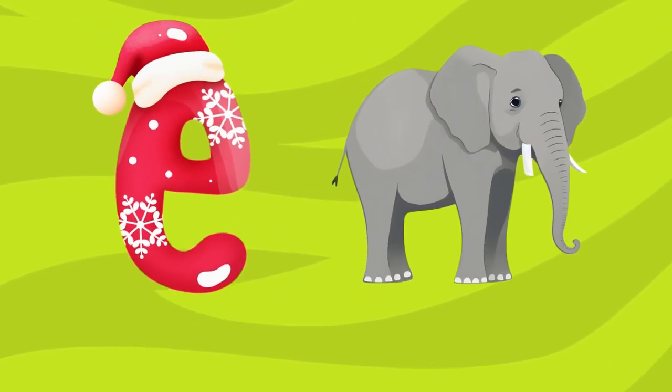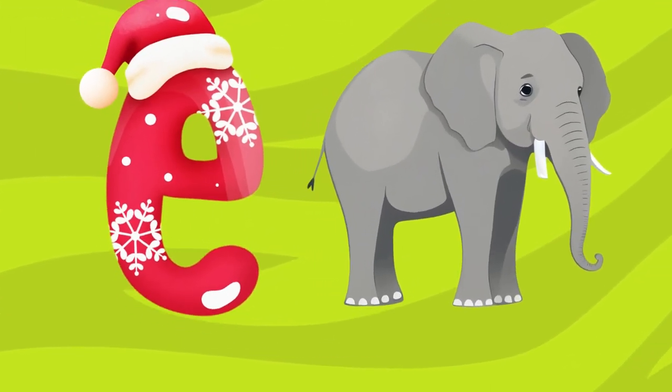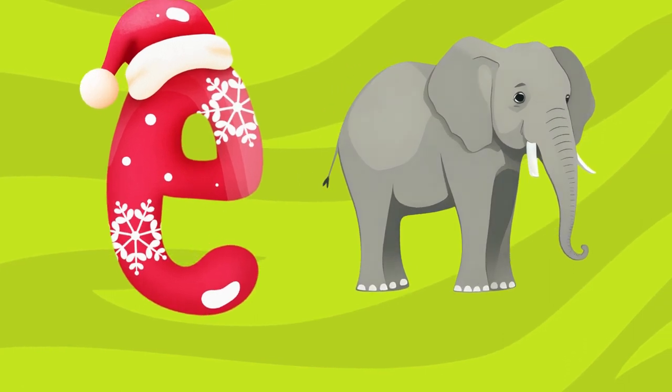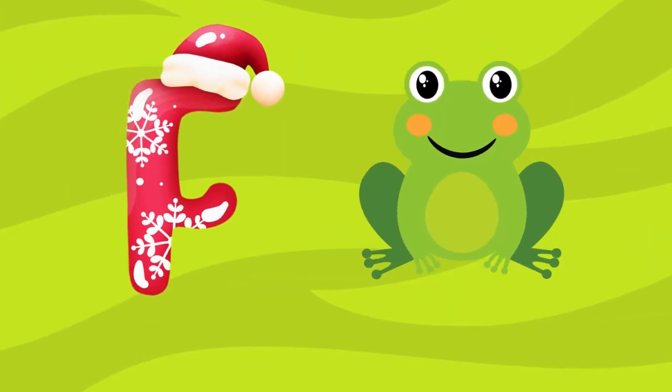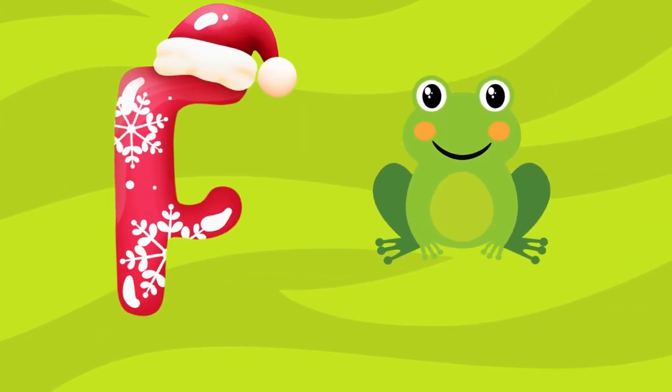E is for elephant, e-e-elephant. F is for frog, p-p-frog.